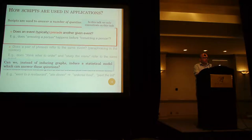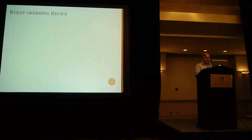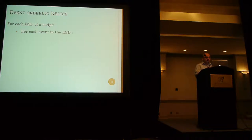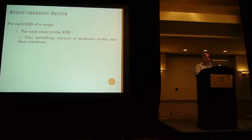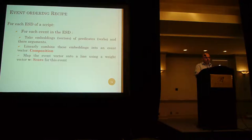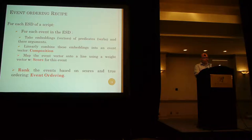In this talk I am going to concentrate only on the event ordering part, and we propose a statistical model for event ordering. So here is the recipe for ordering the events: we start with each ESD of a script, and for each event in the ESD we take the predicates — typically verbs — and the arguments, and we map them to embeddings. Then we combine them to get the event vector, and we map this event vector onto a line using a weight vector. Once we have the scores for all the events in the ESD, we rank them to get the event ordering.